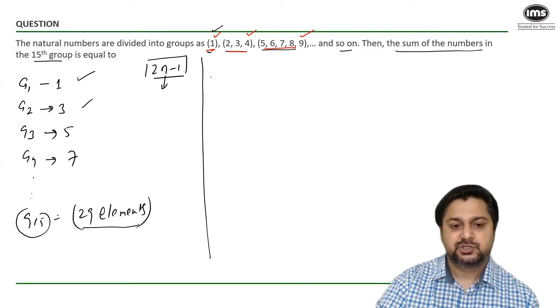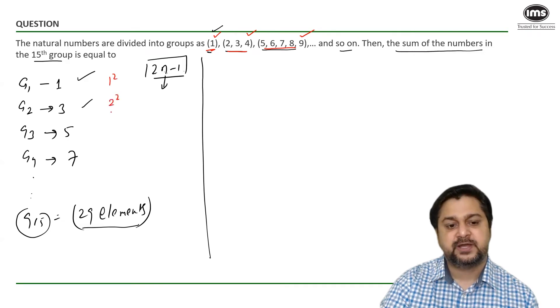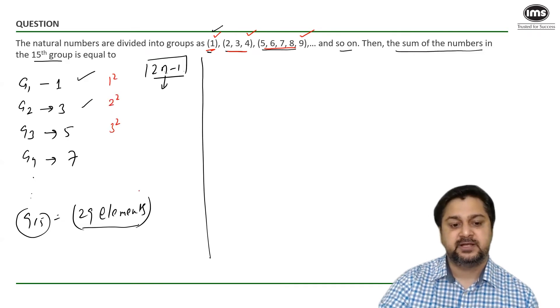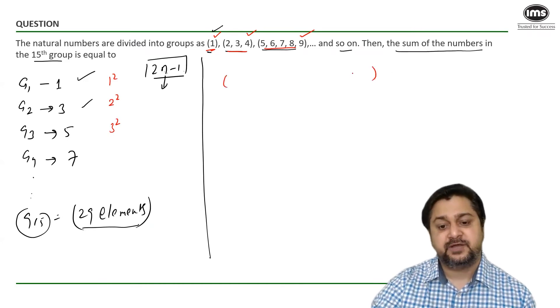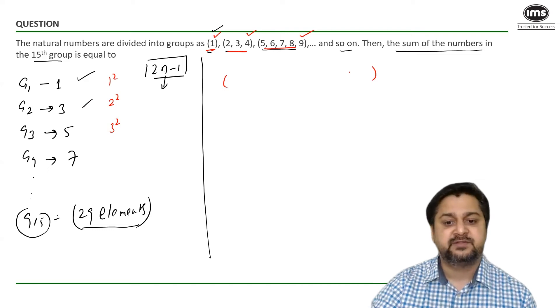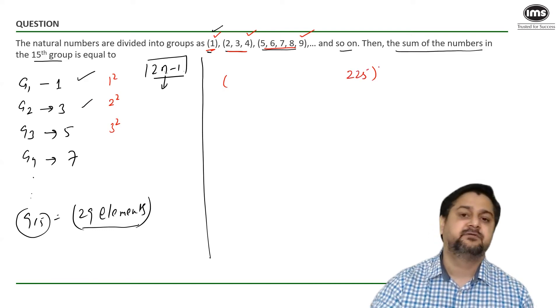So as you can see, group number 1 ends with 1 square, group number 2 ends with 2 square, group number 3 ends with 3 square. So group number 15, which has got 29 elements, must definitely be ending with 15 square. That would make it 225.